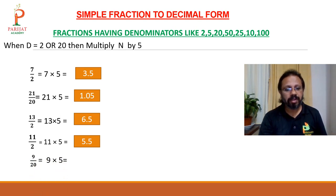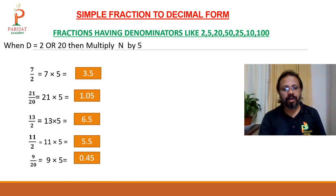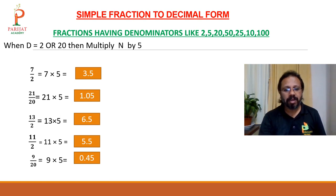9 upon 20: multiply 9 by 5 to get 45. The denominator is double digit, so leave the last 2 digits and give the decimal point — answer is 0.45.